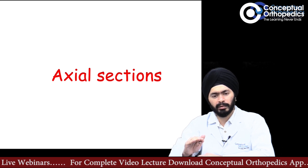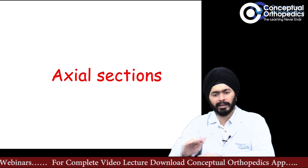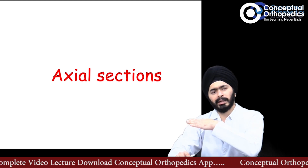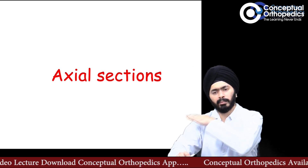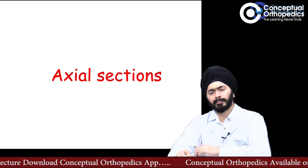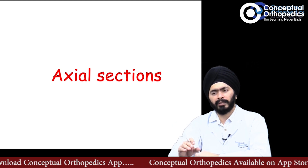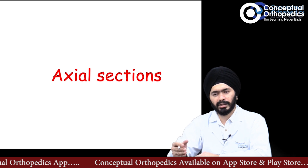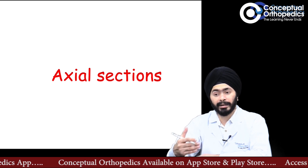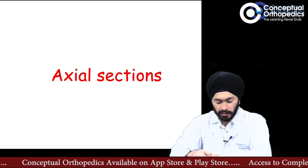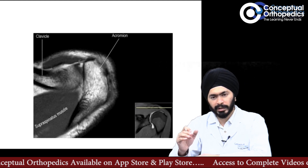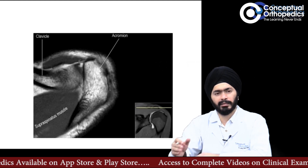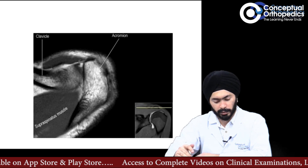First, let's talk about how axial sections look and what you are looking at. Axial images usually start from top to bottom. What will help you identify whether these are upper or lower sections is: if you see the acromion, the AC joint, and the clavicle in the first section, you are going from top to bottom.